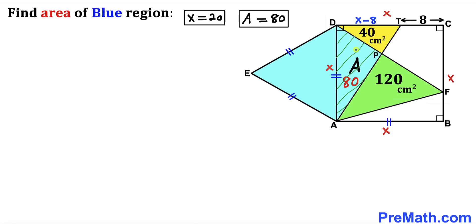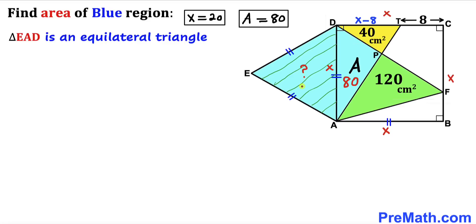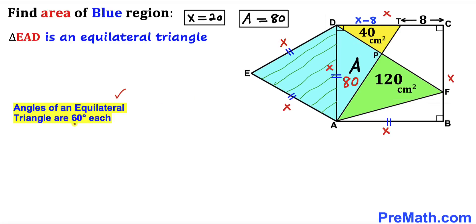We have now found the area of part of the blue quadrilateral APDE. Next, we calculate the area of equilateral triangle EAD. Since all three sides are equal and the side length is x equals 20, each side is 20 cm. Recalling that all angles of an equilateral triangle are 60°, this angle is 60°, this angle is 60°, and this angle is 60°, and they add up to 180°.